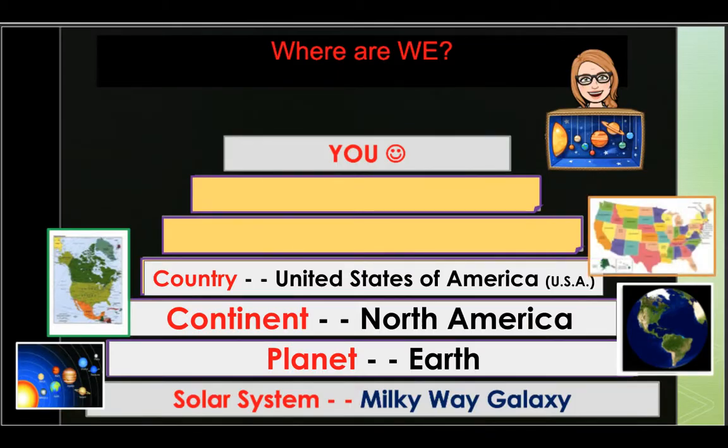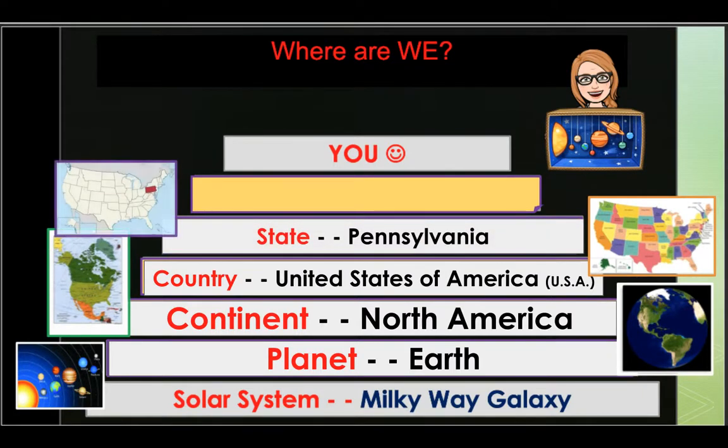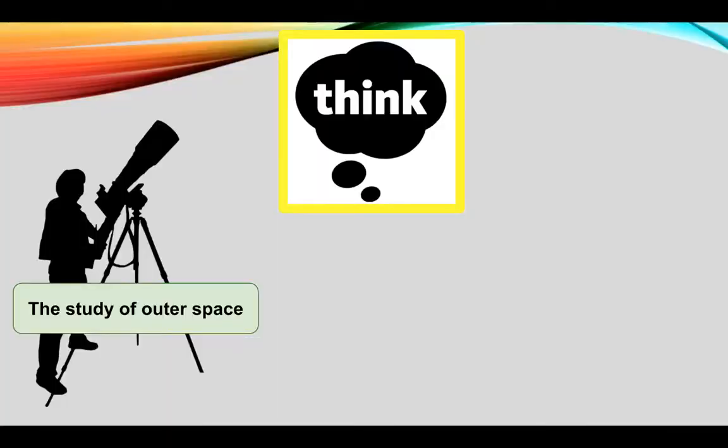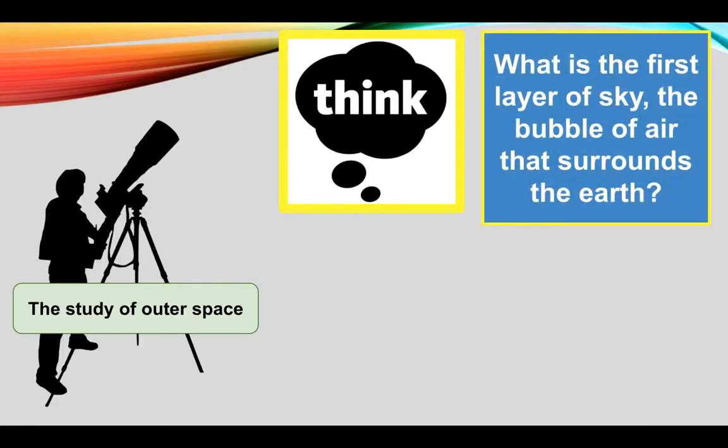In the United States of America, there are lots of different states. We live in the state of Pennsylvania. Our city is Erie. What do we call a scientist who studies astronomy or space? We call them an astronomer.